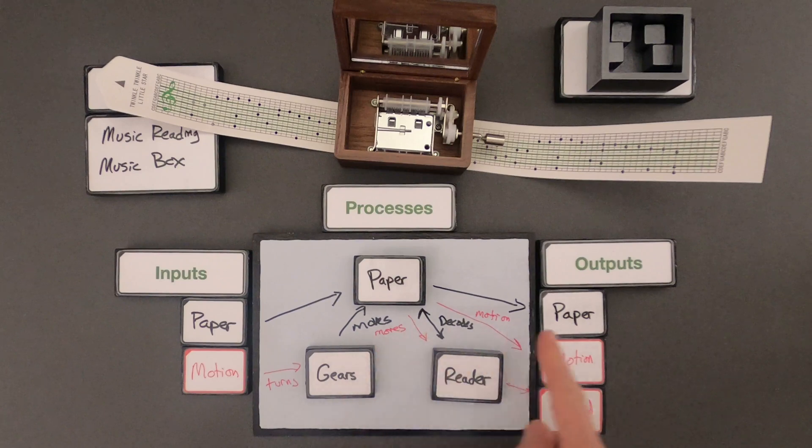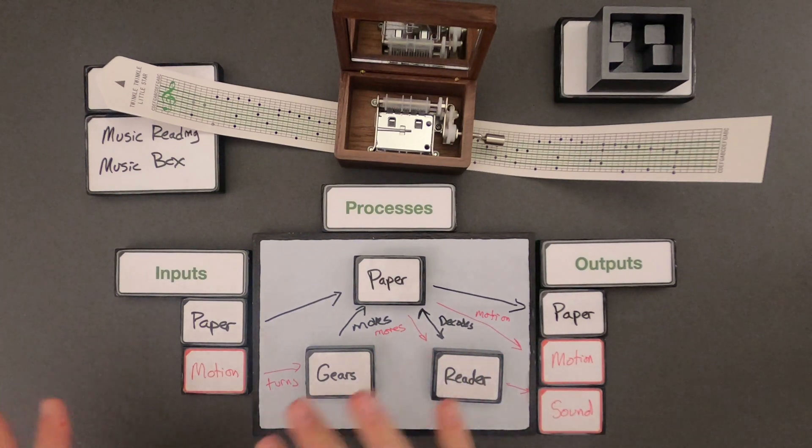We also have the motion of the paper moving out so we've got some motion energy leaving. And so this is inputs, processes, and outputs. Remember the color. I'm showing the black just representing the matter and then that red representing the energy.